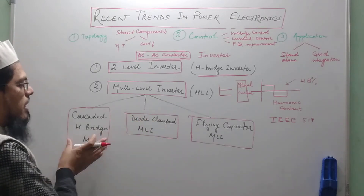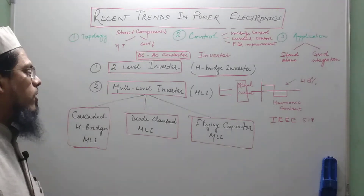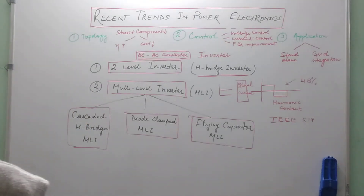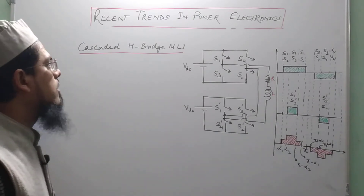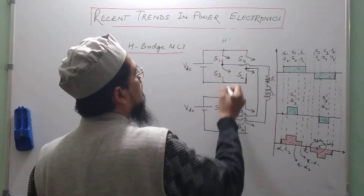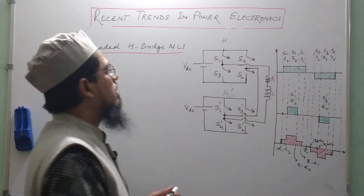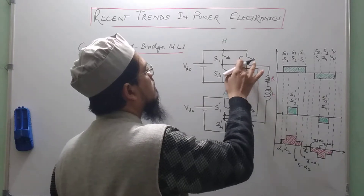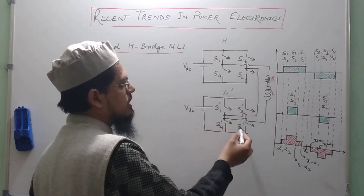Cascaded H-bridge and diode-clamped topologies are still quite widely used in industries. So let us discuss the cascaded H-bridge multi-level inverter. As the name suggests, we have two H-bridges — call them H1 and H2. Each of them has four switches: S1, S2, S3, S4 for the first bridge, and S1-dash, S2-dash, S3-dash, S4-dash for the second bridge H-dash.